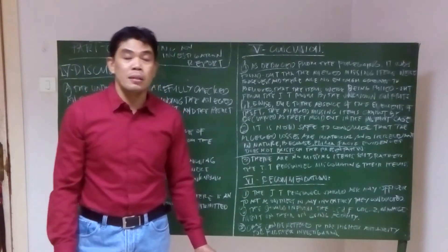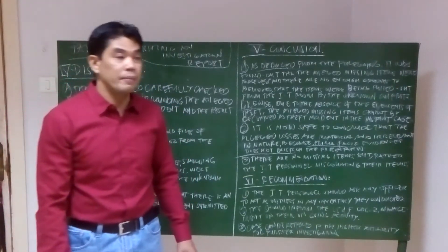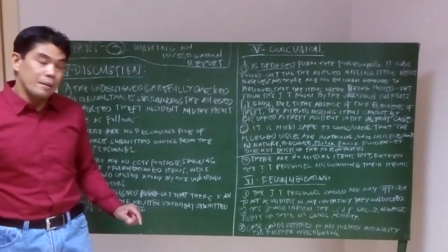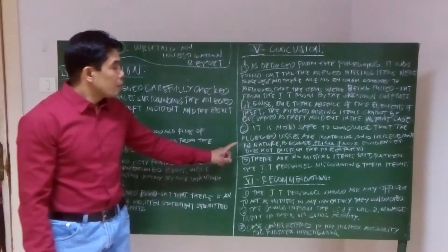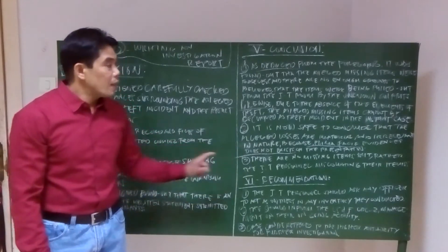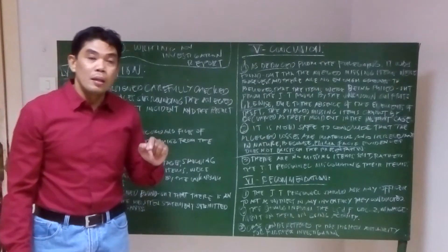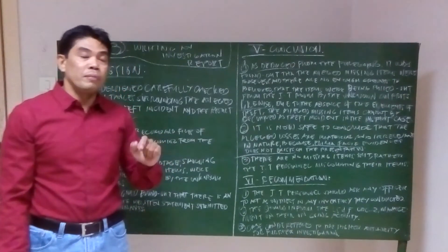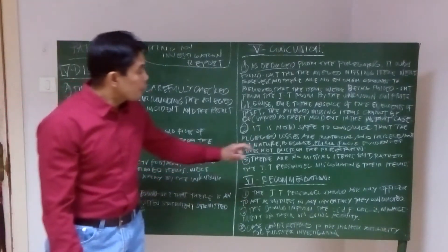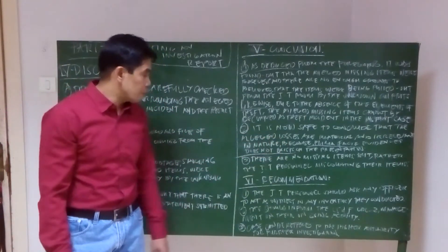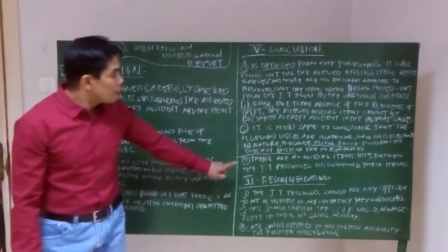When we say prima facie evidence, that is strong and convincing evidence. Prima facie in the instant case is absent. When we say immaterial and irrelevant, you cannot declare a theft incident because the elements of theft are absent and there are no prima facie evidences found during the investigation.